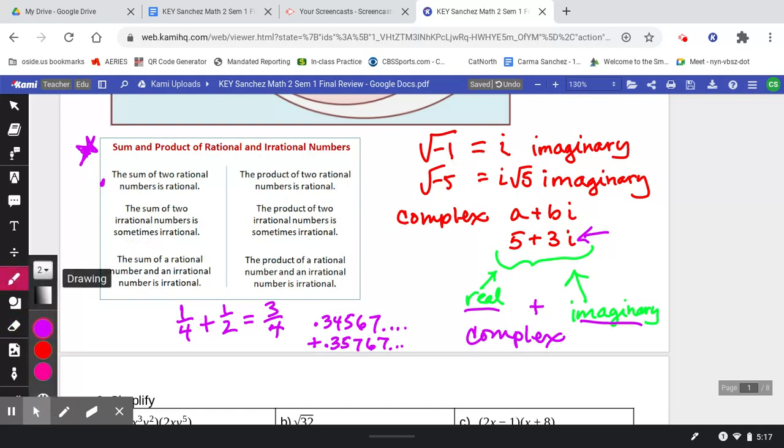Finally, the sum of a rational number and an irrational is irrational. So a rational and an irrational, because we're adding an irrational, it's always going to come out irrational. So keep in mind that these properties could be tested as well, not only on our final,